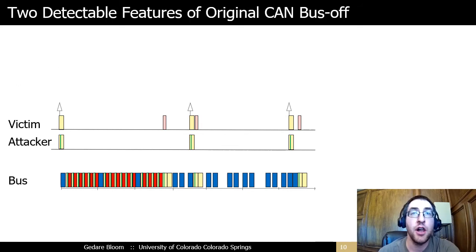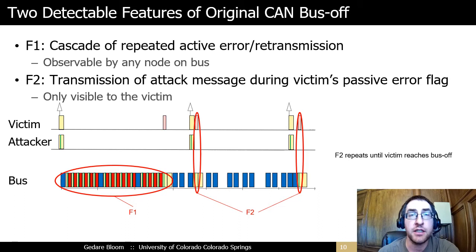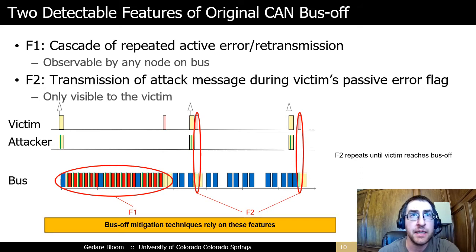Cho and Shin, the original authors of the bus-off attack, identified two detectable features that can be used in countermeasures. Feature F1 is the cascade of repeated active error flags and retransmissions — this feature is clearly observable on the bus and unusually rare in practice. Feature F2 is the victim's observation of another node successfully transmitting over its passive error flag; this can only be detected by the victim itself, and therefore mitigation techniques based on it require modification of all nodes. Countermeasures to bus-off have generally relied on these features.